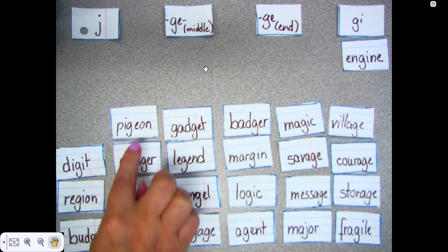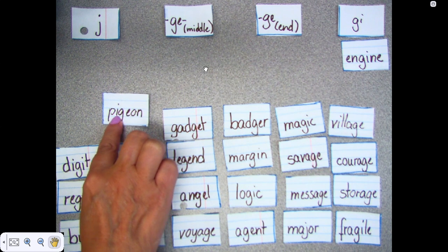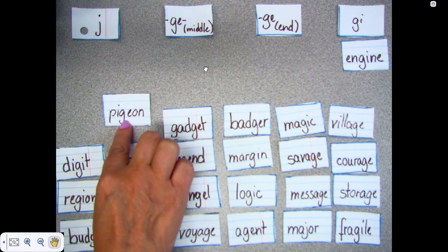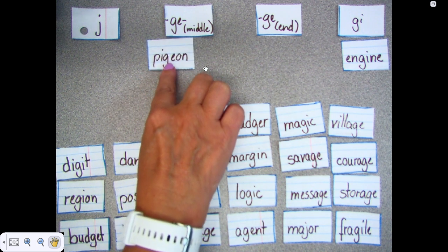My next word is pigeon. The I in front of the G is not what's making the sound, the G-E. And that G-E is in the middle of the word, so it goes over here.